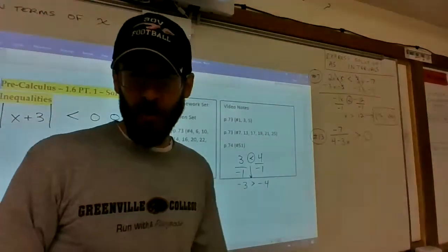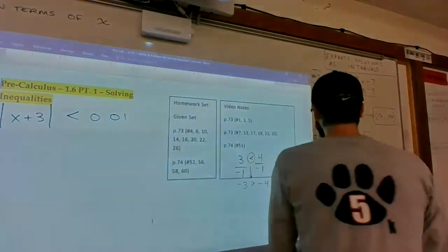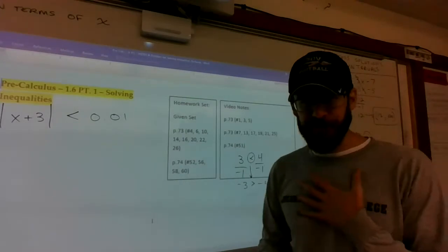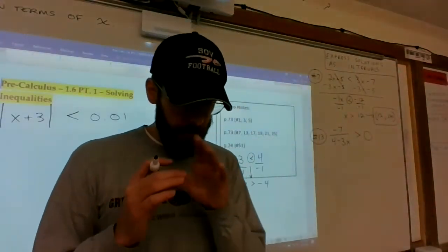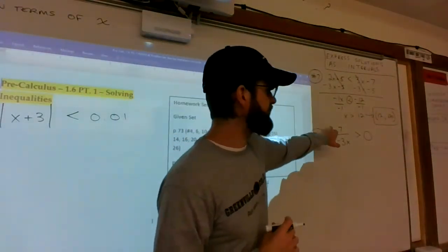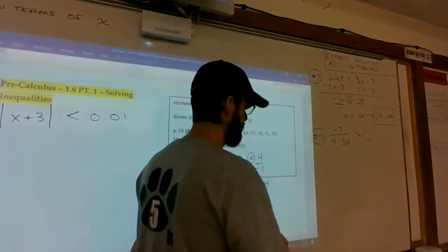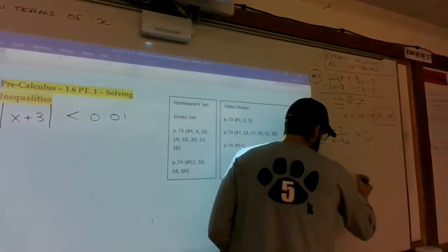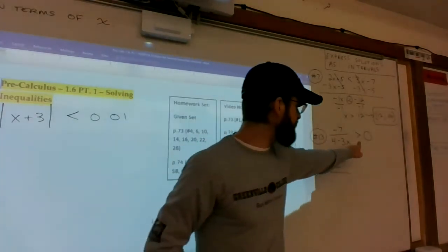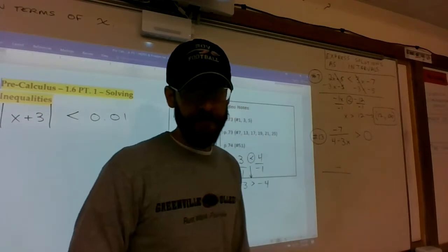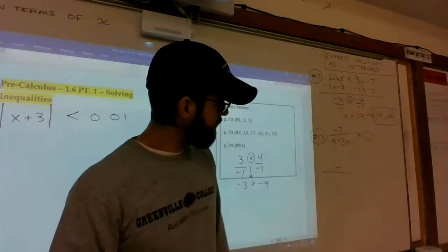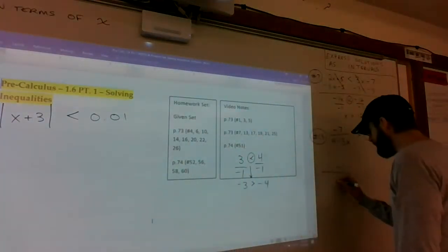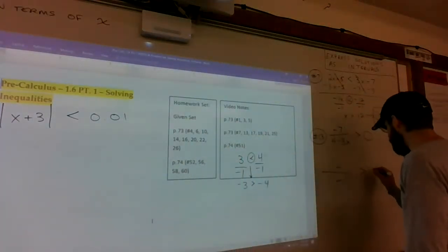Number 13 is a little more complicated. I've got a couple different ways to do number 13. The first way is an intuitive approach. I've got a negative number on top. A negative divided by what would force us to be greater than zero? It has to be a negative divided by a negative. A negative divided by a negative must be greater than zero.